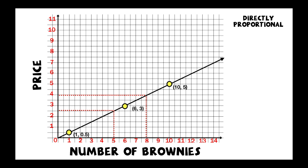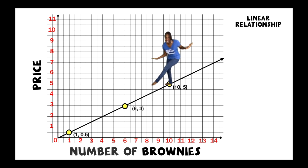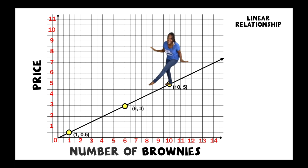This graph is actually directly proportional, meaning the values are very proportional to each other. I know this because they go through the origin — (0, 0) — so each value in this line has the same type of relationship; it's in proportion to each other. This must also have a linear relationship, and I know this because there's a line — that's what linear means. It means the points lie on the same straight line.